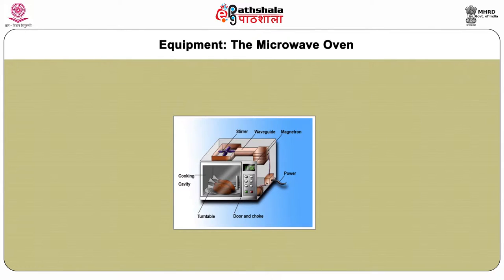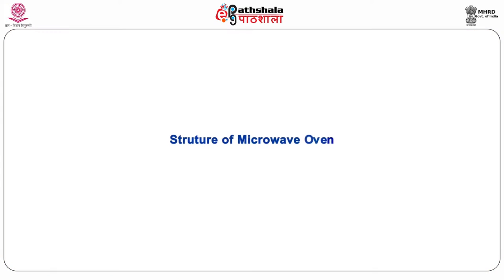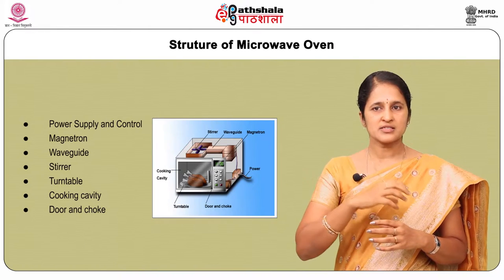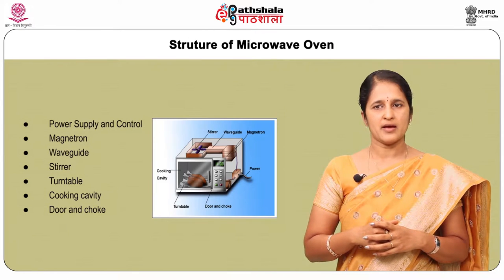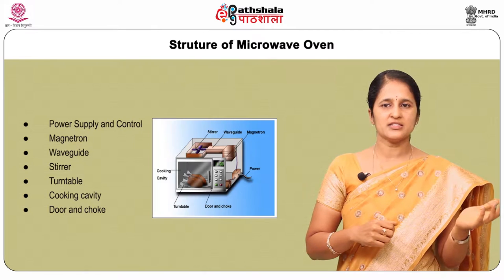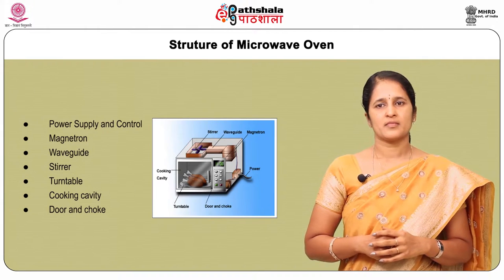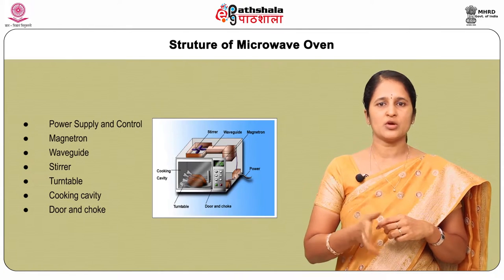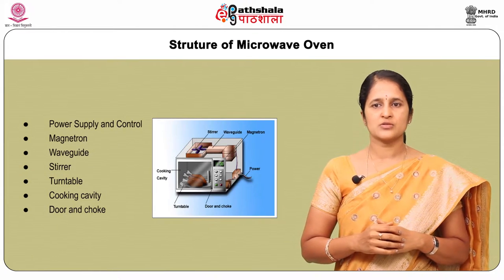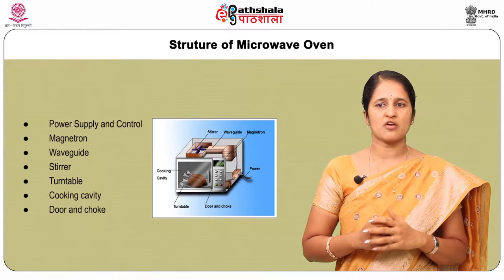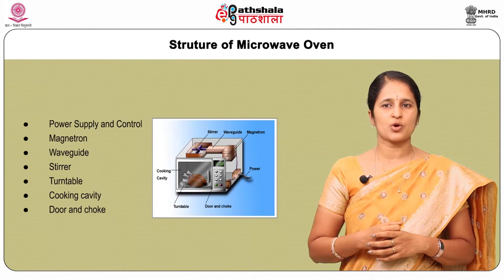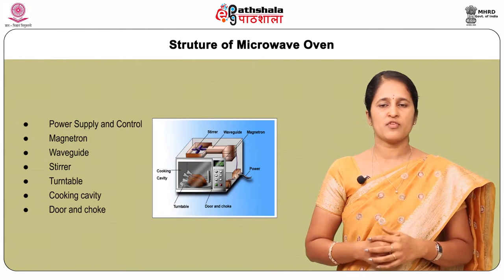The microwave oven generally consists of basic components. The power supply controls the power to be fed to the magnetron. The magnetron is a vacuum tube where electrical energy is converted to an electromagnetic field. The wave guide is a rectangular metal tube that directs the microwaves generated from the magnetron to the cooking cavity, and it also prevents direct exposure of the magnetron to food particles.